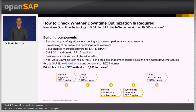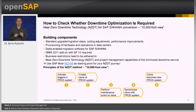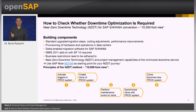The third approach is NZDT — Near Zero Downtime Technology — a service-based approach always involving SAP consulting. At a 10,000-foot view: a clone of the productive system is created and all conversion activities are executed on this clone, while end-user activity on the productive system is recorded and replayed back to the clone. This results in just a small downtime for the final switchover from the productive system to the clone. An SAP note is listed for more information and registration. This concludes the overview of downtime blocks in the technical conversion and the three available approaches. Thank you for listening.